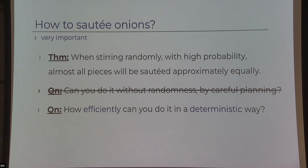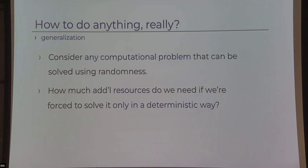Once we figure this out about onions, we generalize and ask: how can we do anything? Consider any computational problem that you can solve using randomness. How much does it cost in terms of resources to do it in a carefully planned deterministic way?